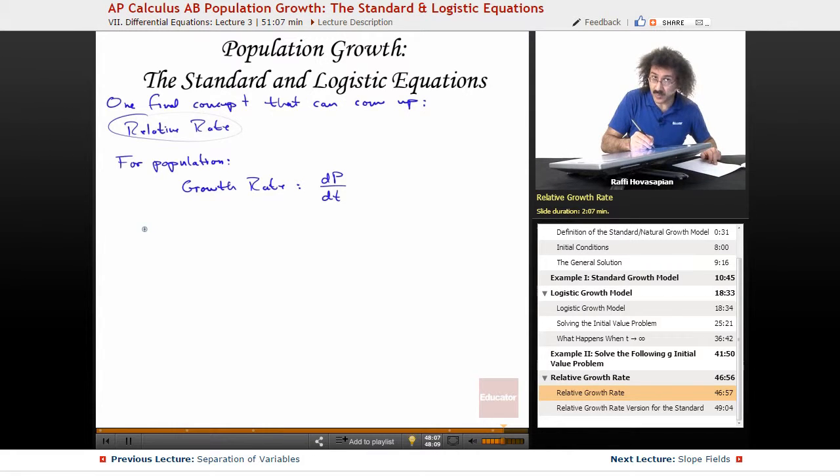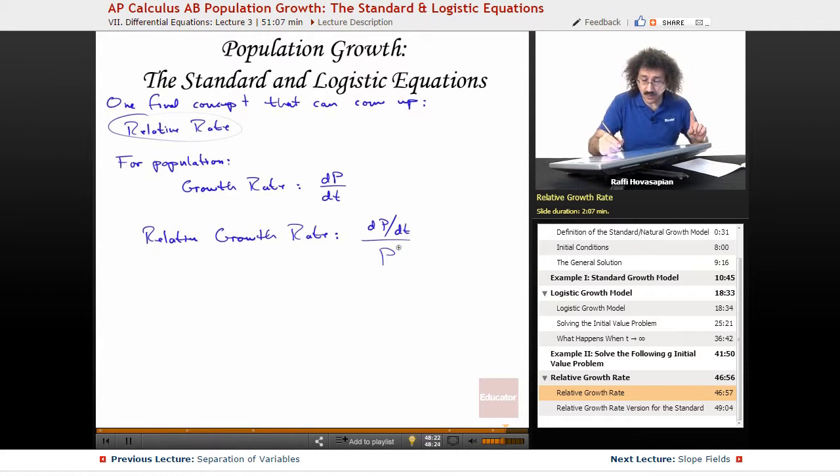Relative growth rate, or relative rate of growth, or relative rate—you might see it that way too. Relative growth rate is equal to dp/dt, the growth rate divided by the population at the time, or you can do it this way: 1/p times dp/dt.